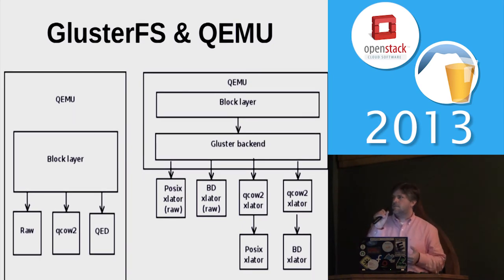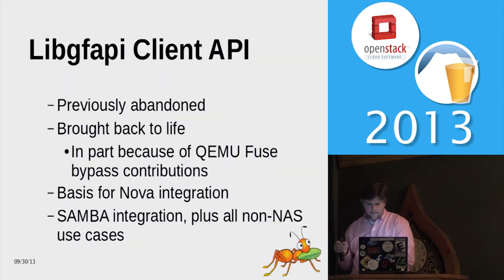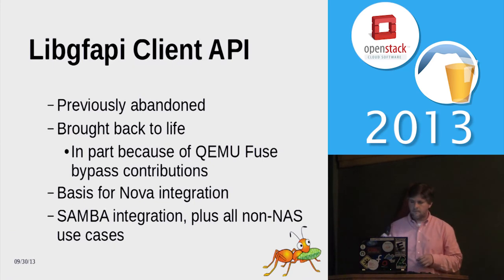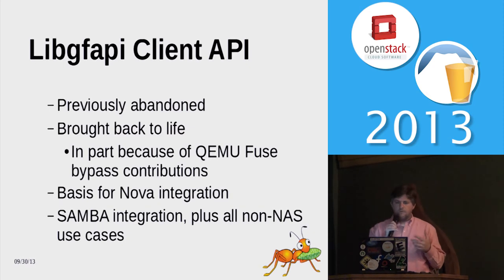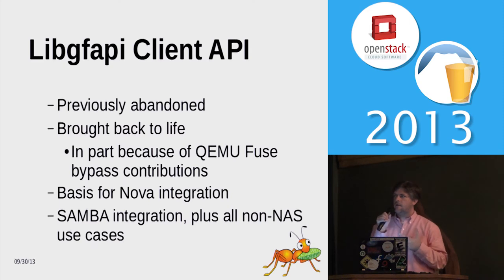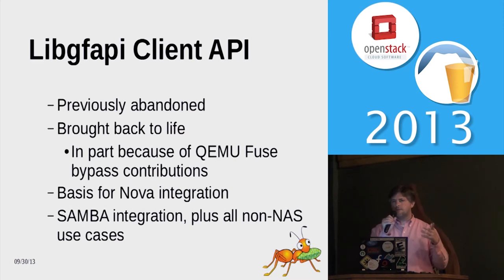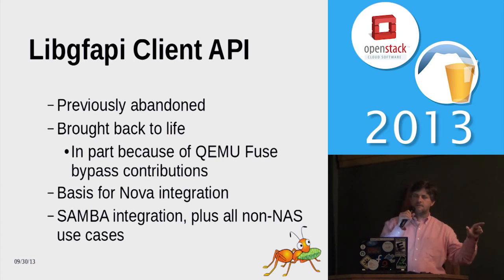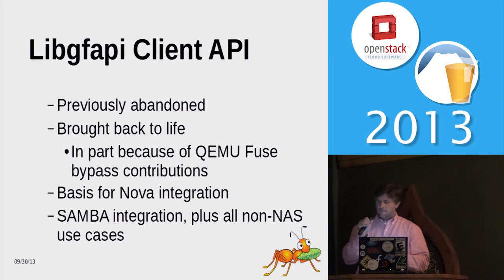As we were working on this and realized it would be successful, we came to see that the LibGF API methodology should be the basis for future integrations. It became the basis for the Samba integration contributed upstream into Samba 4.1, and it's going to be the basis for a future Swift API implementation, the Nova integration, and by extension the Cinder integration for Havana.